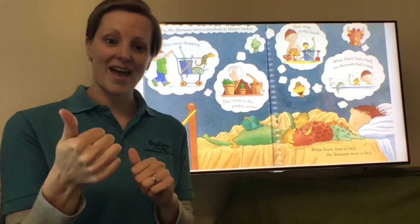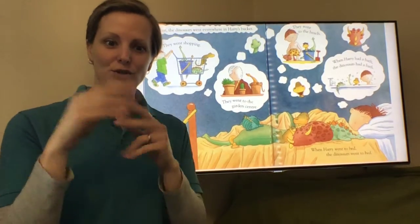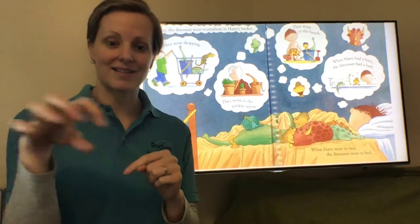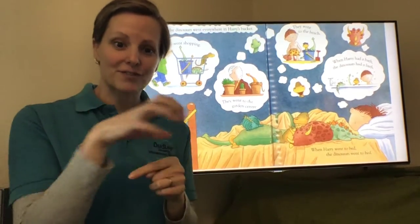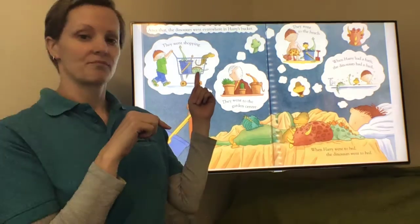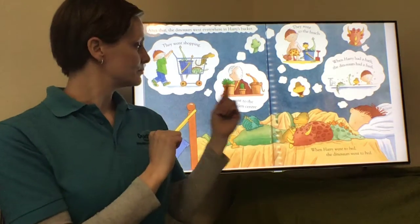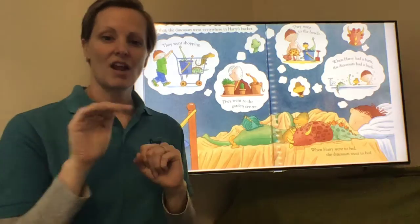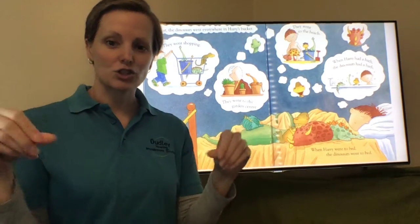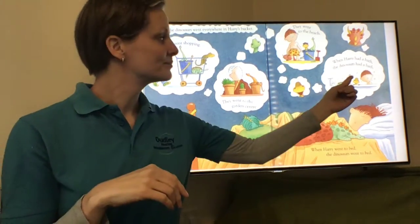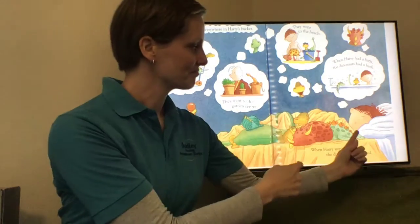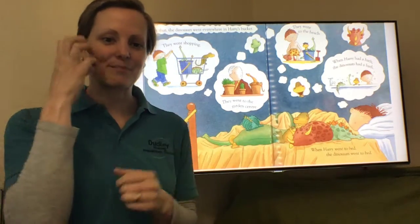Then Harry took the dinosaurs to lots of different places. There are lots of different settings on this page: the shops, the garden centre, the beach, the bath, and Harry's bed.